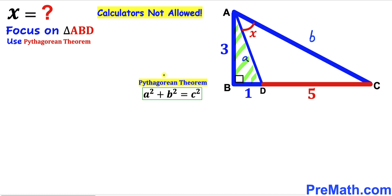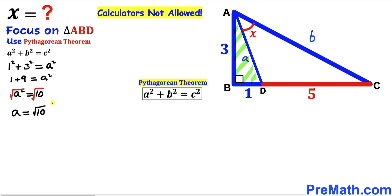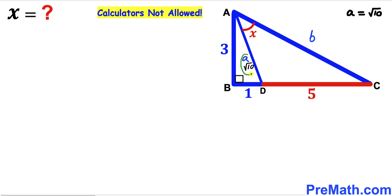We are going to apply the Pythagorean theorem on triangle ABD. The formula is a² + b² = c². In our case, AD is the hypotenuse. Filling in the blanks: 1² + 3² = a², which gives us a² = 10. Taking the square root on both sides, our lowercase a turns out to be √10.